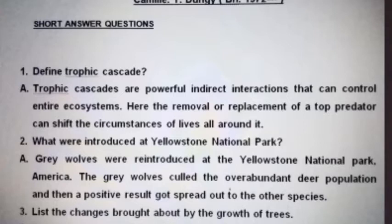The second question is: what were introduced at Yellowstone National Park? Gray wolves were reintroduced at the Yellowstone National Park, America. The gray wolves culled the overabundant deer population and then a positive result got spread out to the other species.